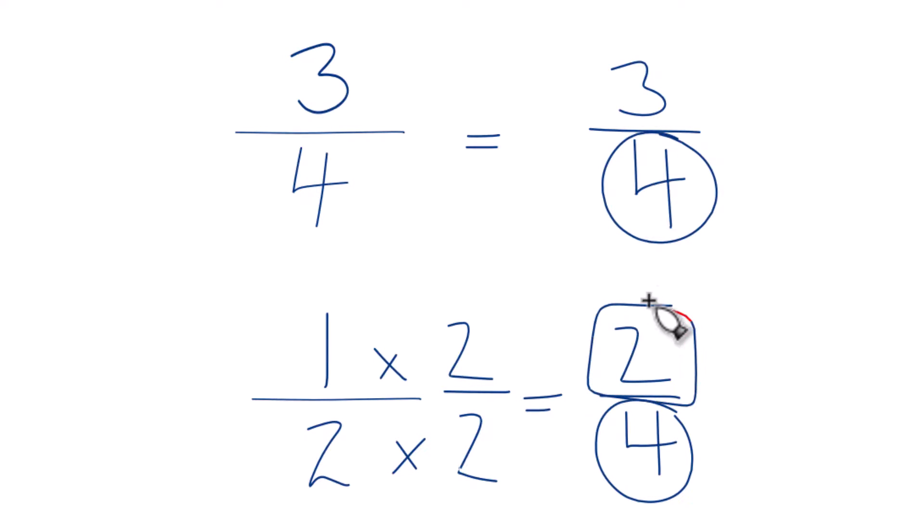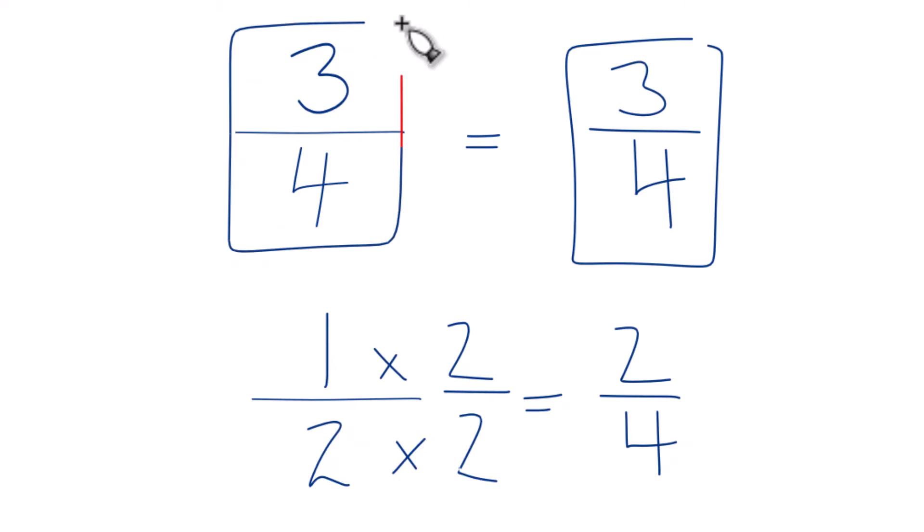When we compare these numerators here, you'll note that 3 is larger than 2. 3 fourths, that's larger than 2 fourths. And 3 fourths here is larger than 1 half, since 1 half and 2 fourths are the same. So 3 fourths, that is greater than or larger than 1 half.